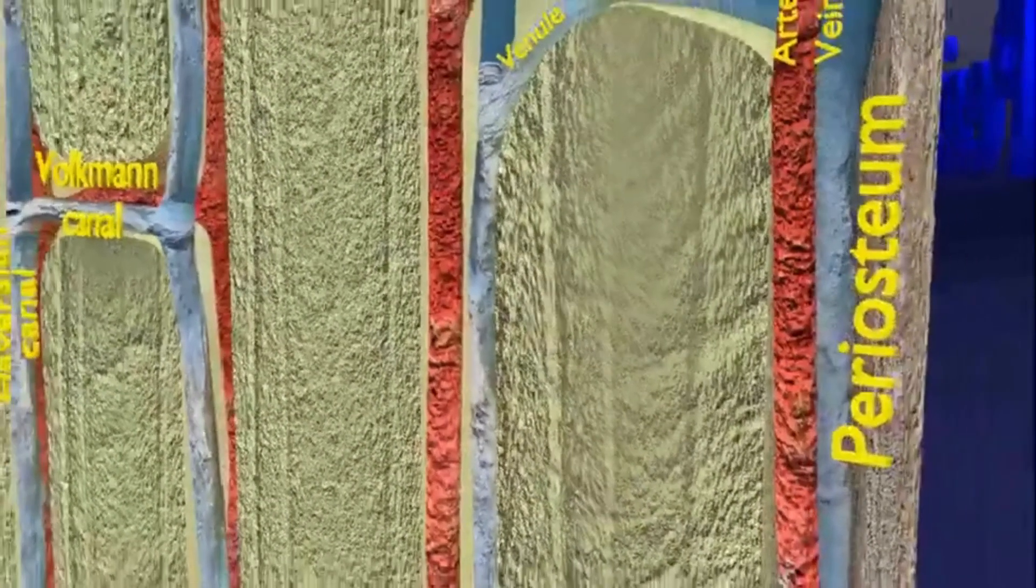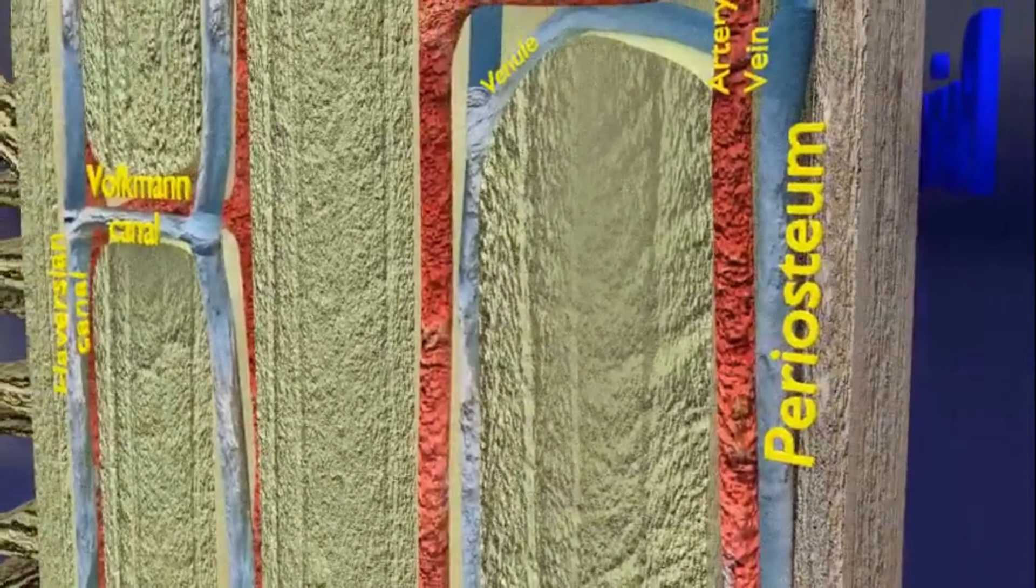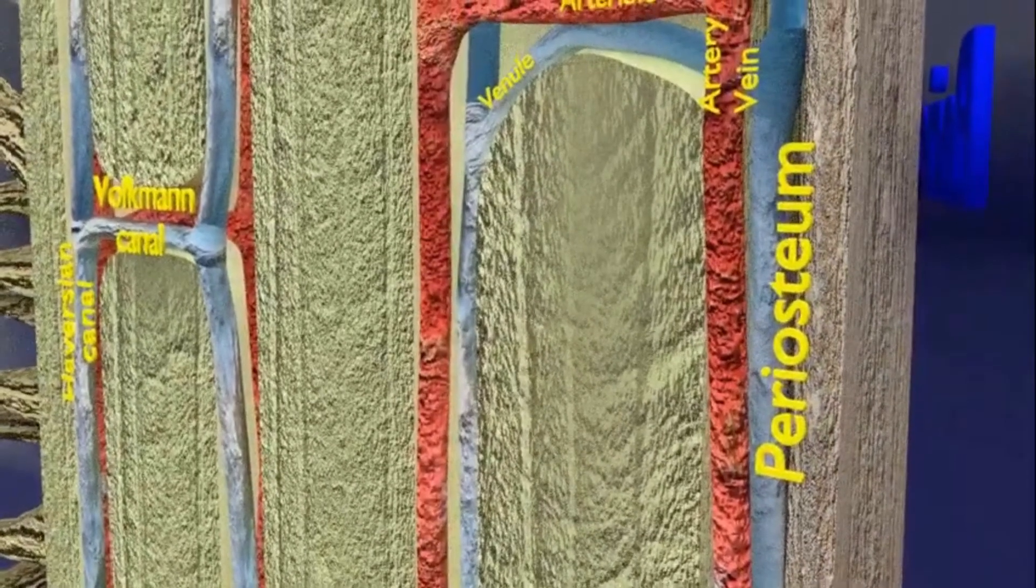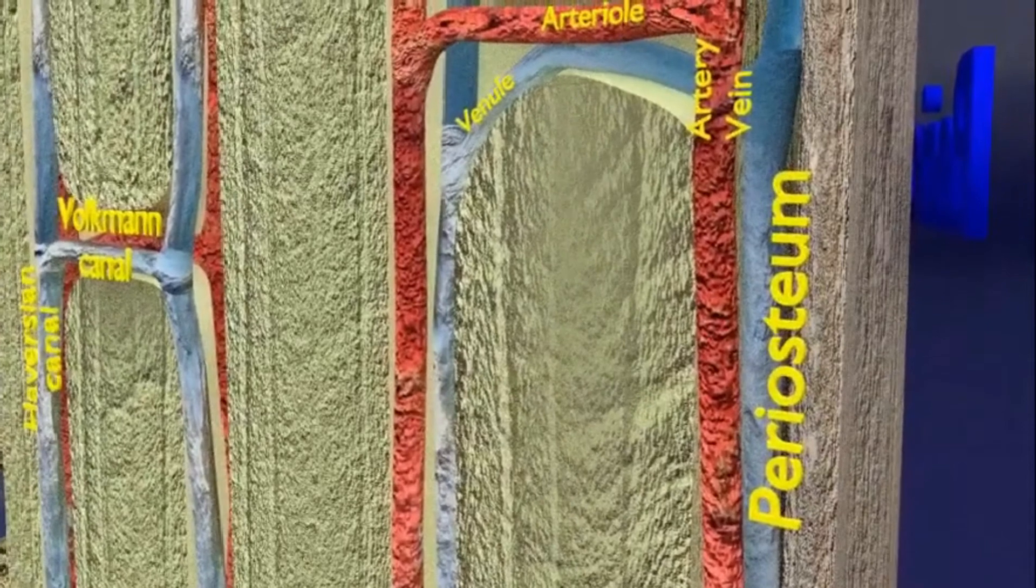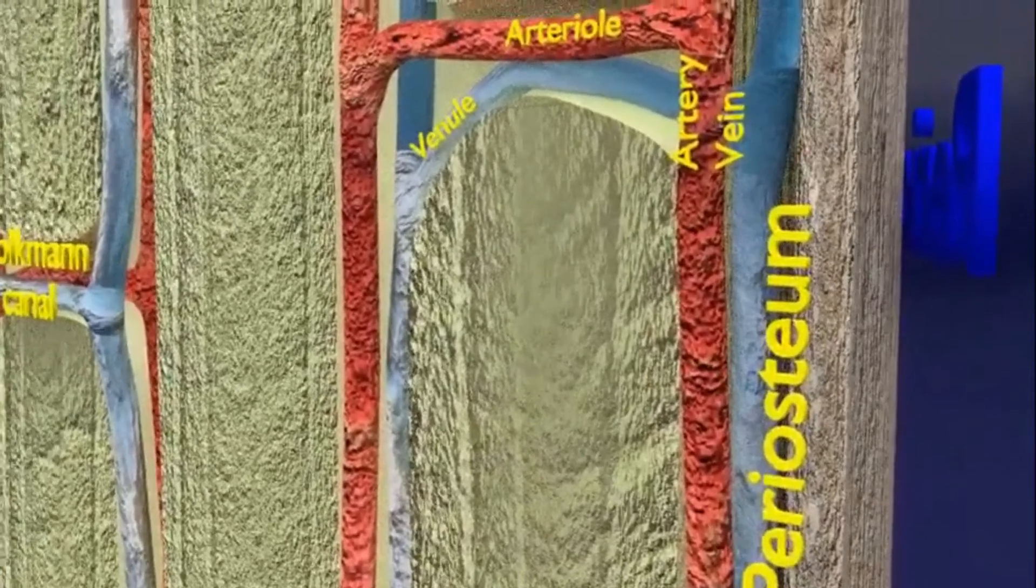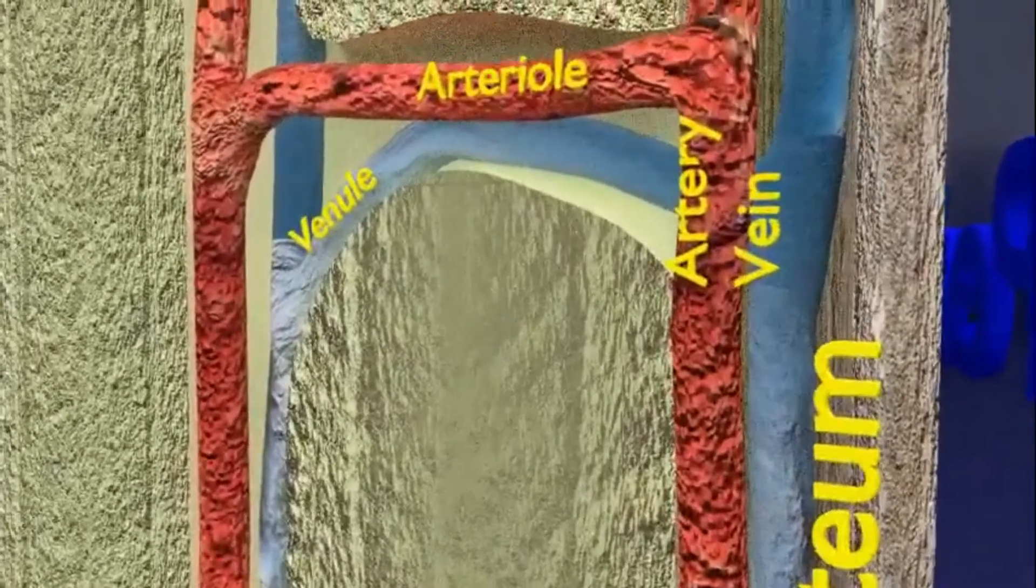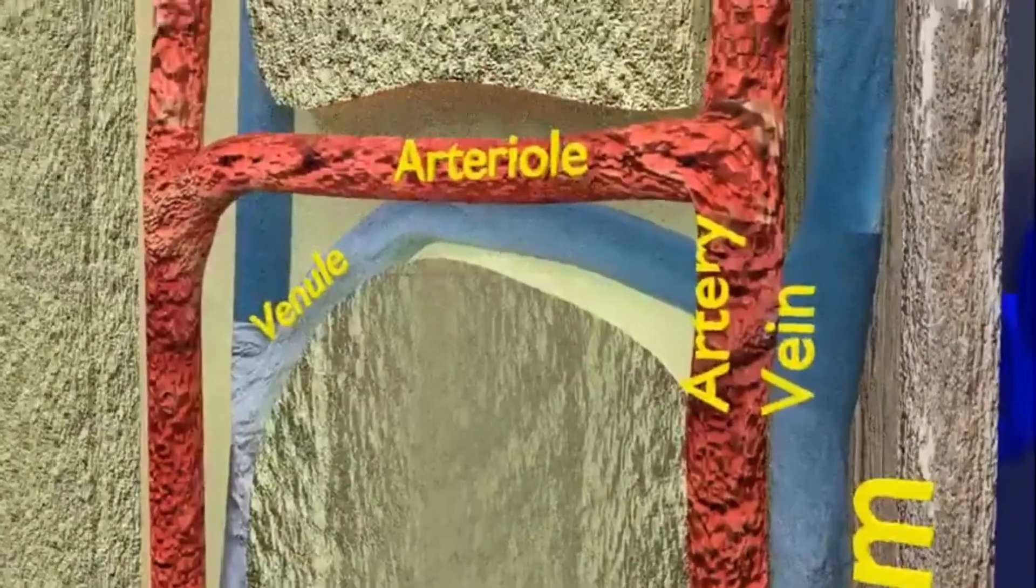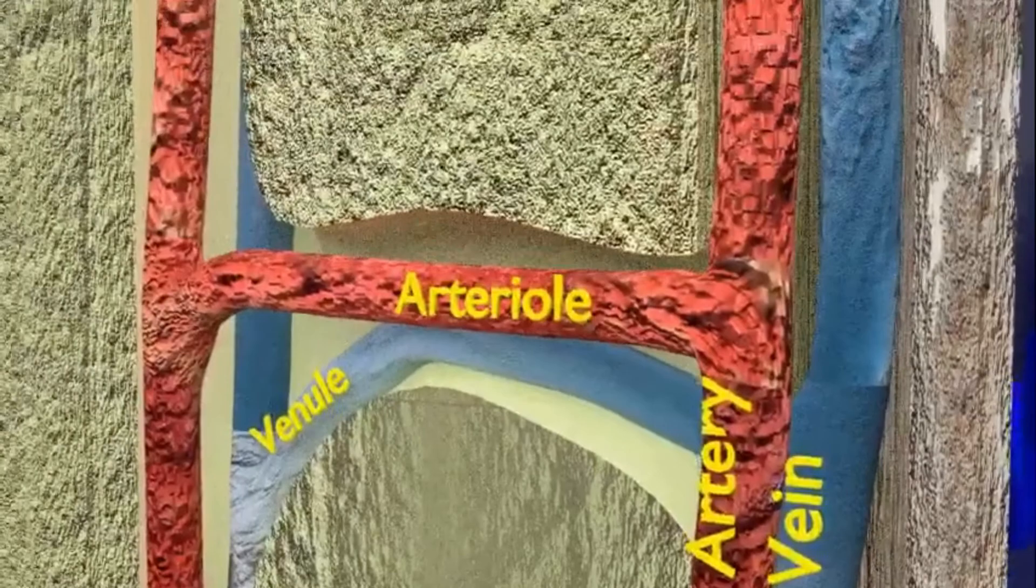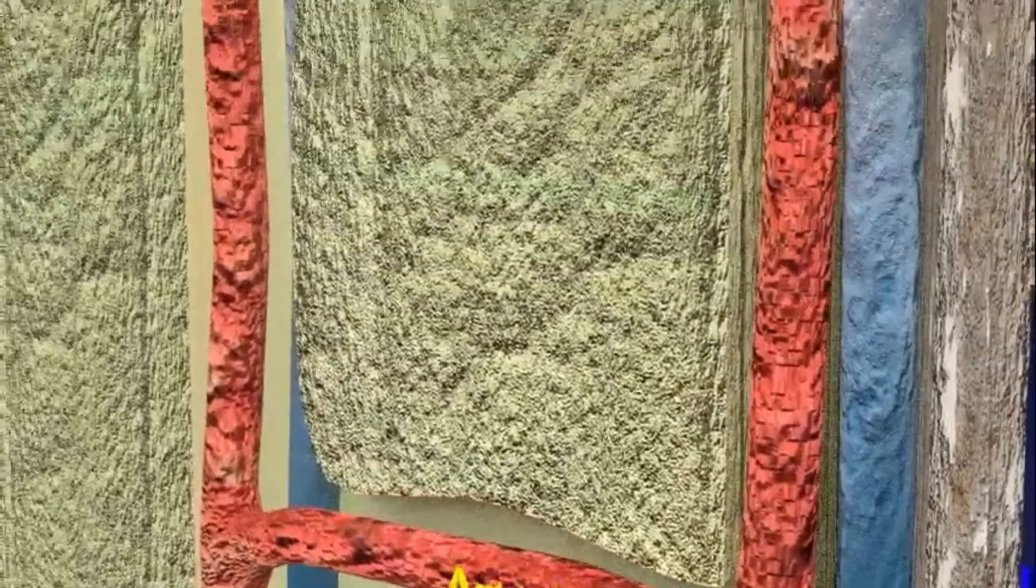A peculiar feature of compact bone is the Haversian system. You can also see a part of the periosteum in this longitudinal section. Central canal seen between the lamina in the 3D view is called the Haversian Canal. It contains the blood vessels, lymph vessels and nerves.